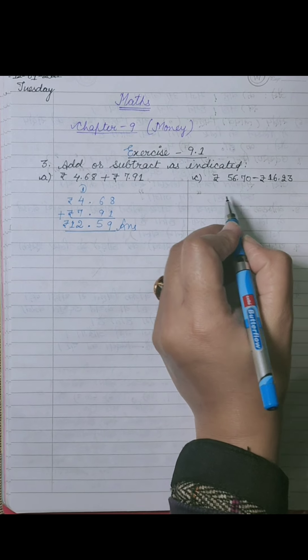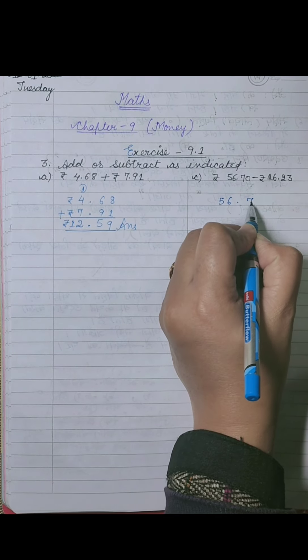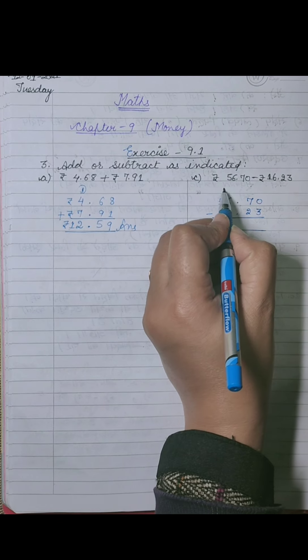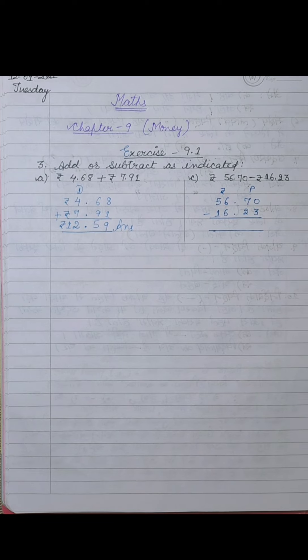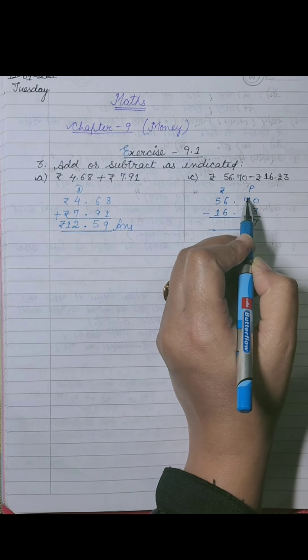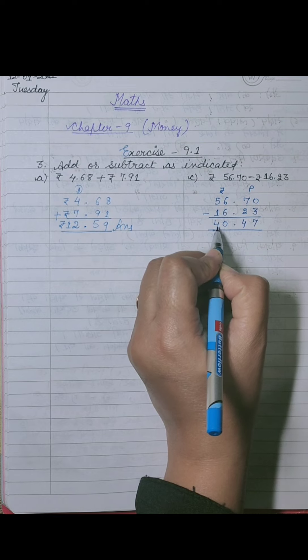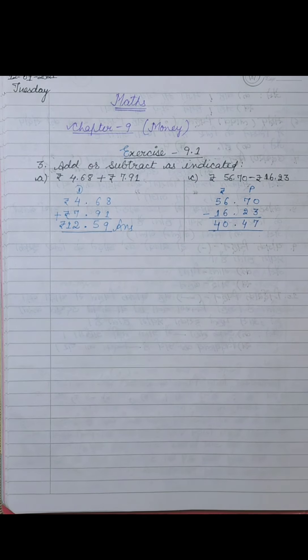Now I am going to solve part c, which is subtraction: 56.70 minus 16.23. Now we will subtract these values. 10 minus 3 is 7, here becomes 6. 6 minus 2 is 4, 6 minus 6 is 0, 5 minus 1 is 4. So it equals 40 rupees 47 paise.